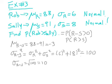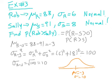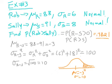Since both distributions are normal, we can draw a normal curve with mean negative 3 and standard deviation 10. We're looking for the probability that R minus S is greater than 0, so 0 sits to the right of center and we want that upper area. On the calculator: normal CDF from 0 to a large number, mean negative 3, standard deviation 10. That gives 0.3821. So there's about a 38% chance that Rob beats Sally on any given test.